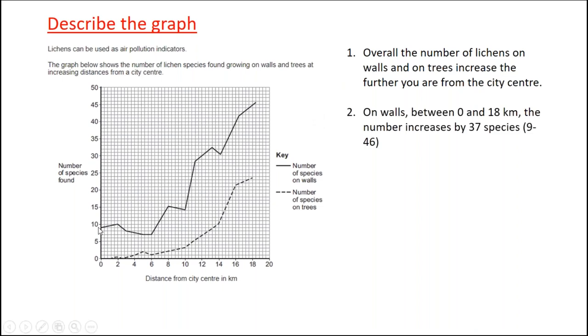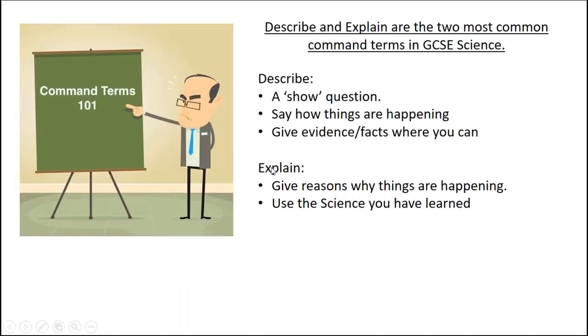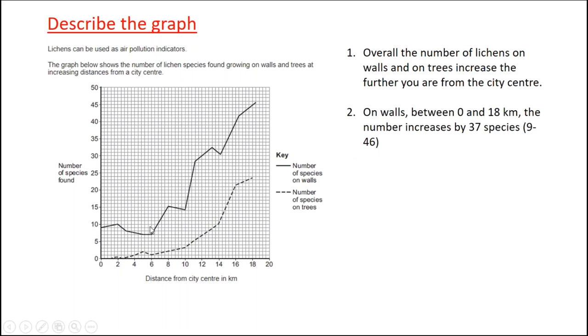I forgot when I told you this first statement. I forgot to give data, didn't I? I forgot to give the evidence. Let's go back here. Say how things are happening. I did that by saying more lichens are further away from city center. I didn't give the evidence. What a noob. My evidence is that on walls between 0 and 18 kilometers, there's an increase of 37 species. It goes from 9 up to 46. I could have quite easily given the data for the trees as well. From 0 to 18 kilometers, it goes from 0 up to about 24. So increases by 24 species on the trees as well. That's giving evidence.